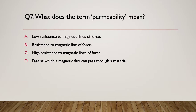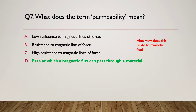Question seven: what does the term permeability mean? Is it A — low resistance to magnetic lines of force; B — resistance to magnetic lines of force; C — high resistance to magnetic lines of force; or D — the ease at which magnetic flux can pass through a material? Pause here. The hint: how does this relate to magnetic flux? The answer is D — the ease at which magnetic flux can pass through a material. That is what permeability is.